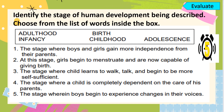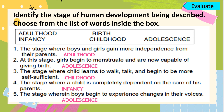For better understanding, please answer the following in your notebook. Identify the stage of human development being described and choose from the list of words inside the box. Let's check your answers: number 1, adulthood; number 2, adolescence; number 3, childhood; number 4, infancy; and number 5, adolescence. I do hope you got a perfect score.